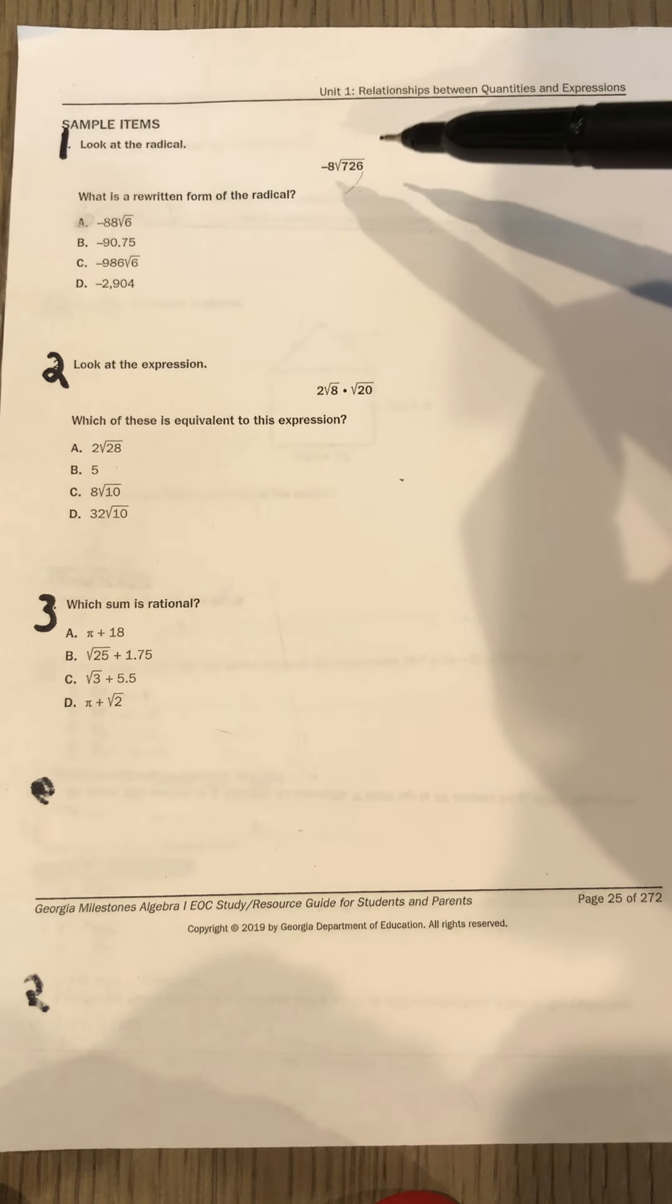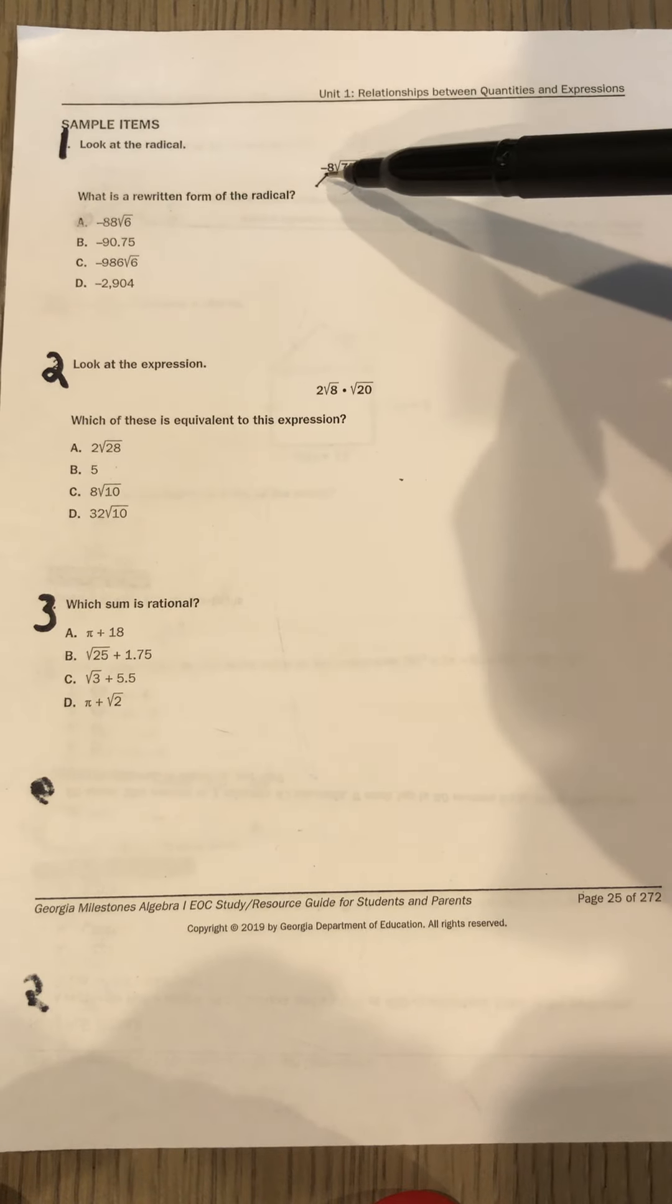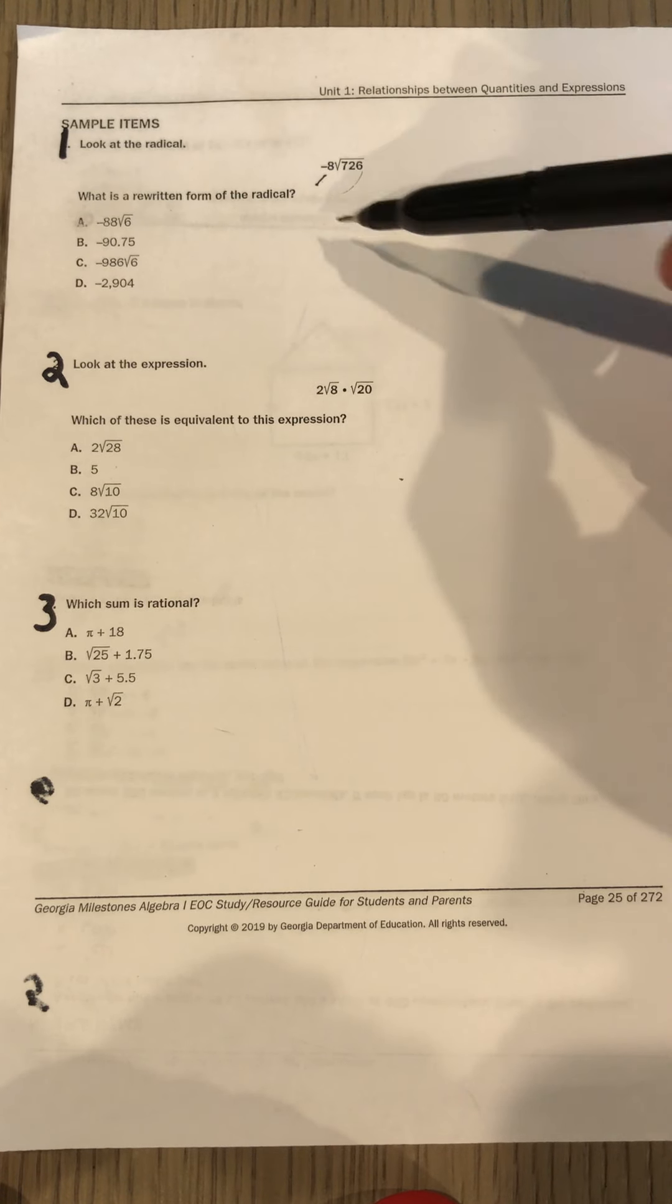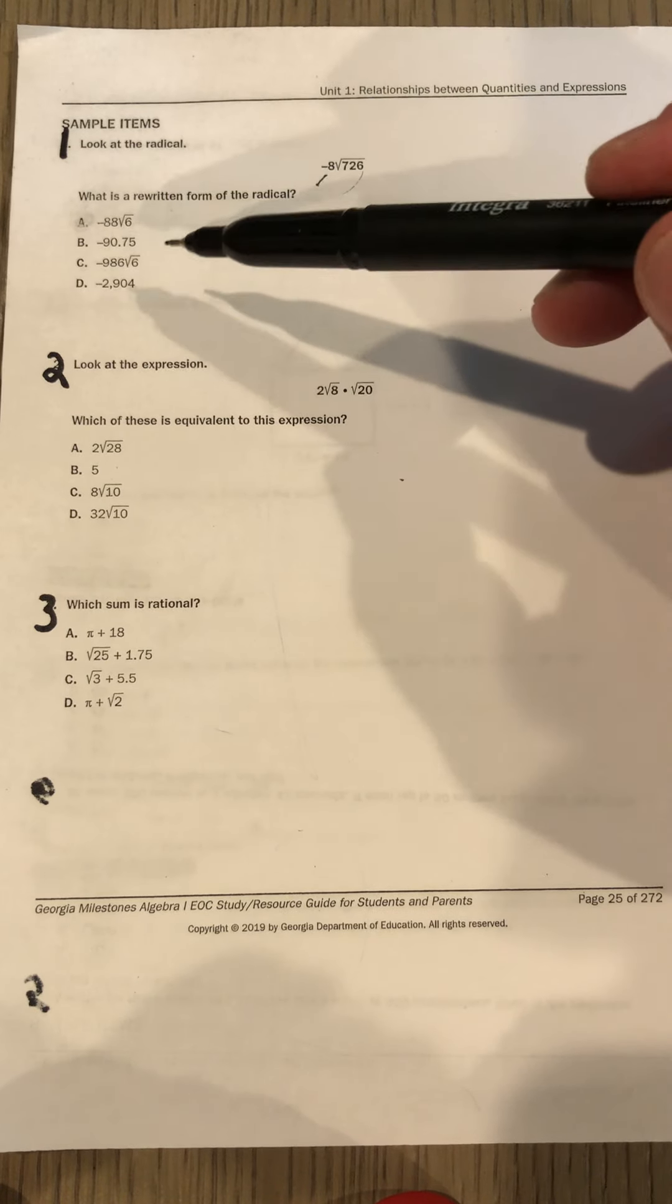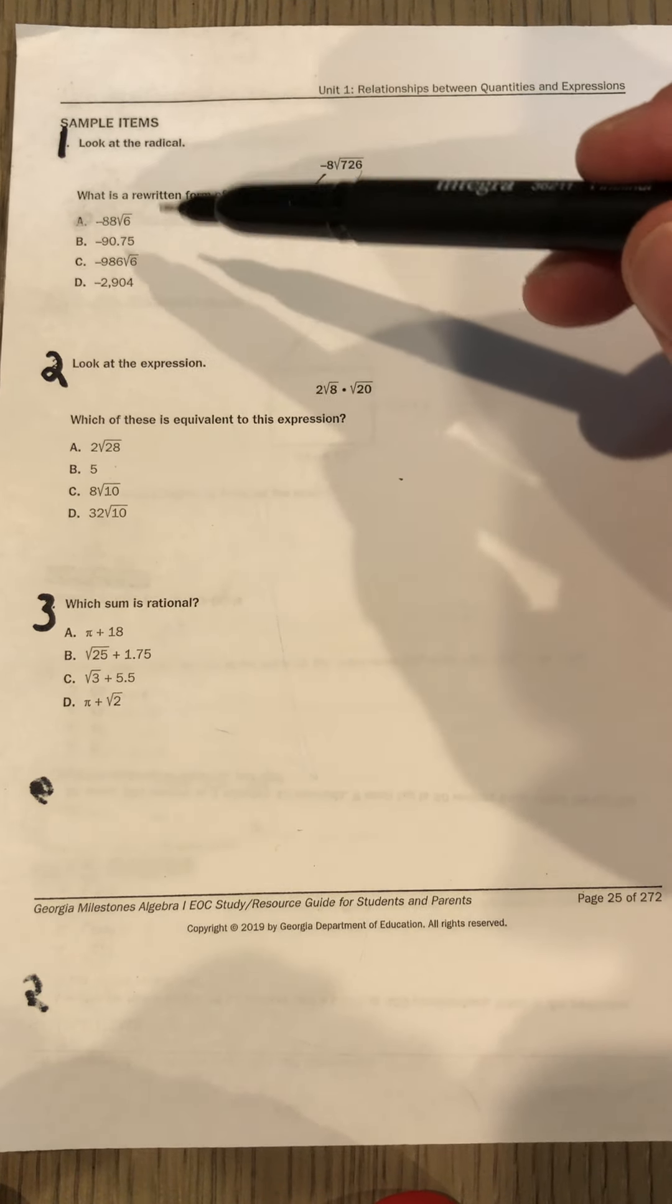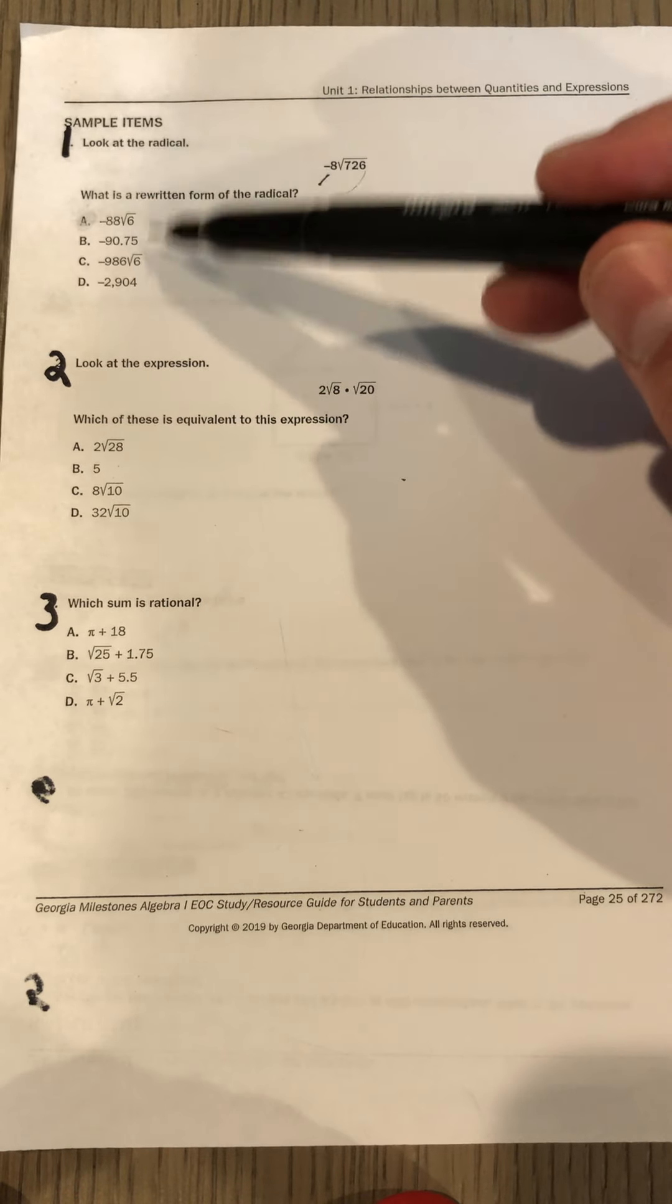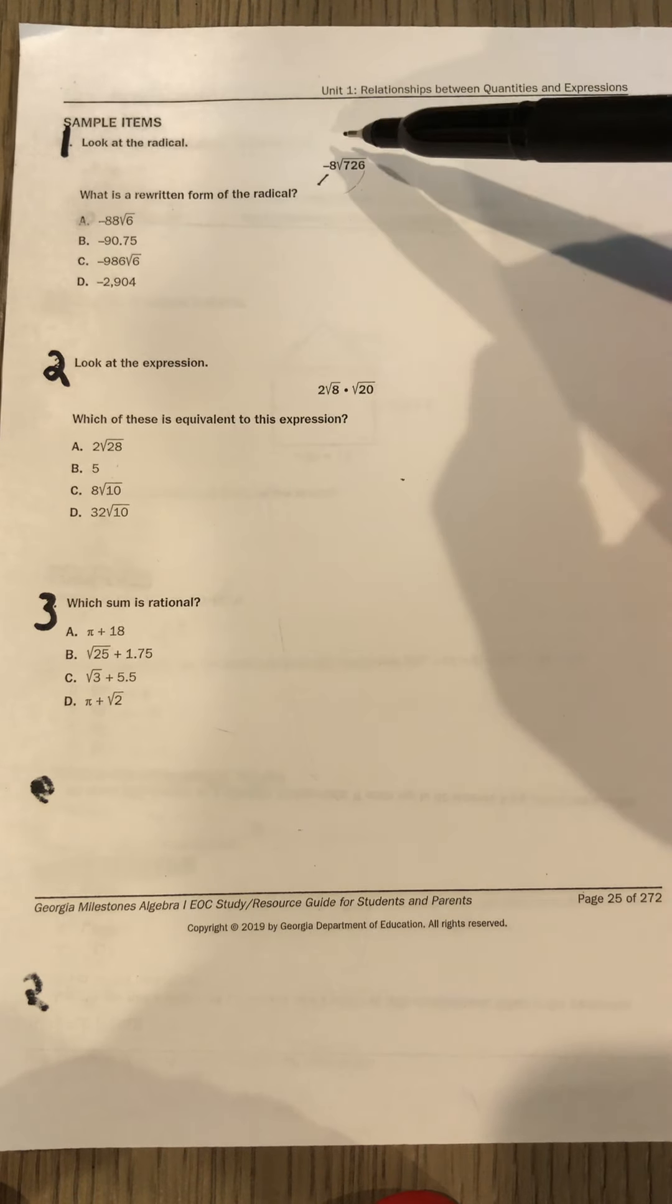And then simplify it all the way down until you get something like this. That seems to be a little bit much. So what we can do instead is put this value—stop writing on here—if you put this value into the calculator and get a decimal result, all you need to do is find out which one of these also has that same decimal result when you put it in the calculator.